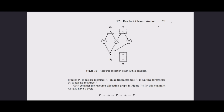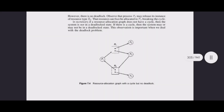Now consider the resource allocation graph in figure 7.4. In this example, we also have a cycle, but there is no deadlock. Process P4 may release its instance of resource type R2, which can then be allocated to P3, breaking the cycle. In summary, if a resource allocation graph does not have a cycle, the system is not in a deadlock state. If there is a cycle, the system may or may not be in a deadlock state. Figure 7.4 shows a resource allocation graph with a cycle but no deadlock.